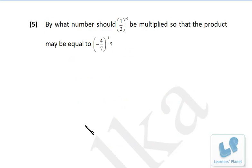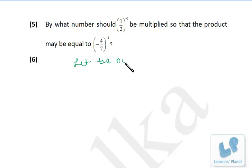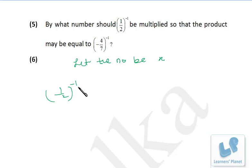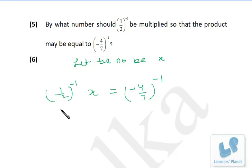Similarly, in this problem: by what number should this be multiplied so that the product is equal to this? Let the number be x. Now, 1 upon 2 raised to minus 1, multiplied by x, and the product is equal to minus 4 by 7 raised to minus 1.